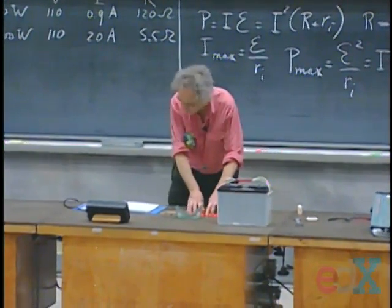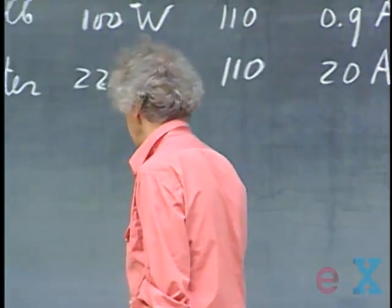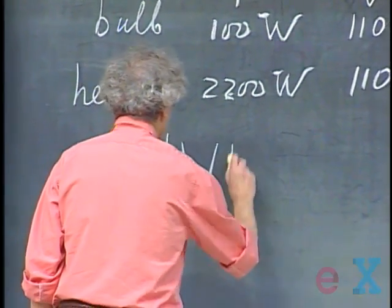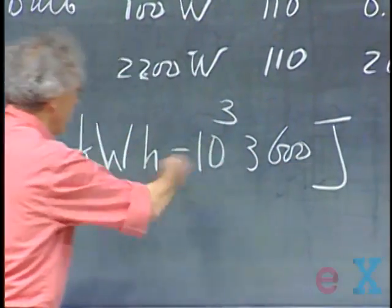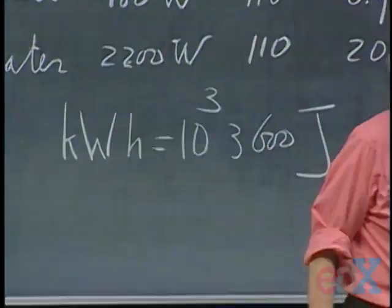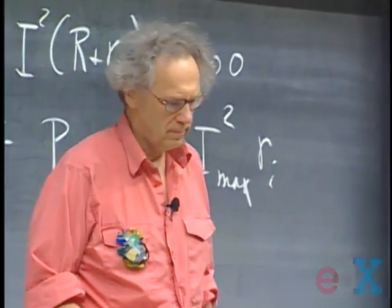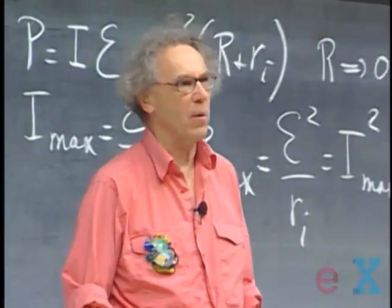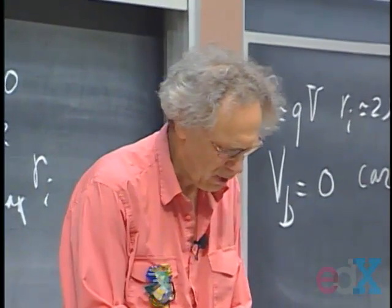Your electric company charges you for energy — not power (joules per second), but total energy used. They charge you in kilowatt-hours. A kilowatt is 1000 watts and an hour is 3600 seconds, so 1 kWh = 3.6 × 10⁶ joules. Running a 2000 W cooking plate for two hours is 4 kWh. They probably charge about ten cents per kilowatt-hour. For that same amount of money you could run your 100 W light bulb for 40 hours, or brush your teeth with your electric toothbrush for about 1000 hours.